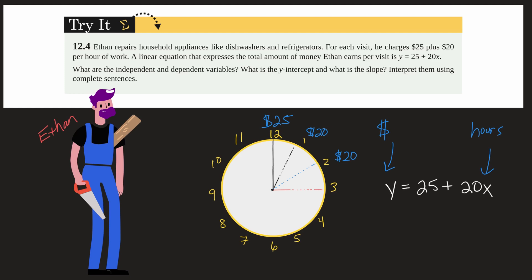So independent is hours and dependent is money. Next, what is the y-intercept and what is the slope? So the y-intercept, remember, is the point on the graph where this line will cross the y-axis. And the y-intercept is where x is zero.